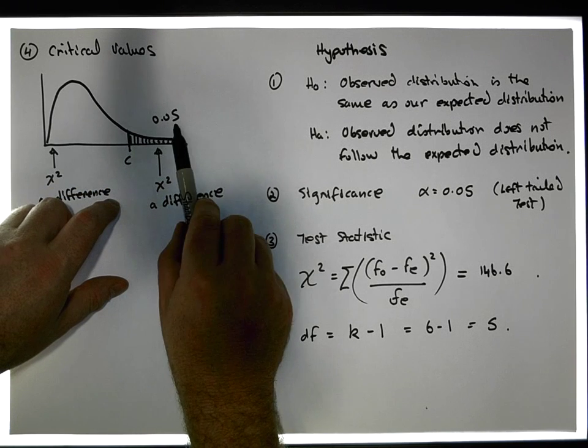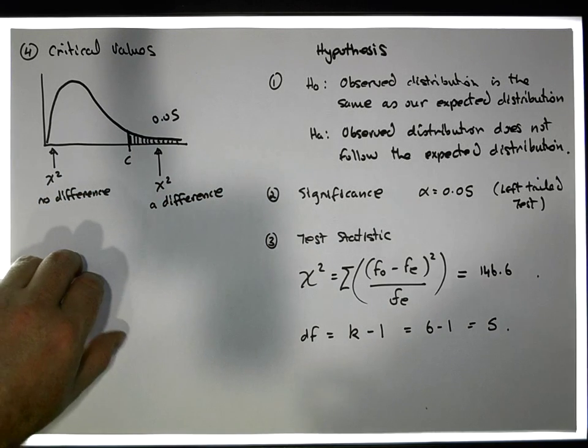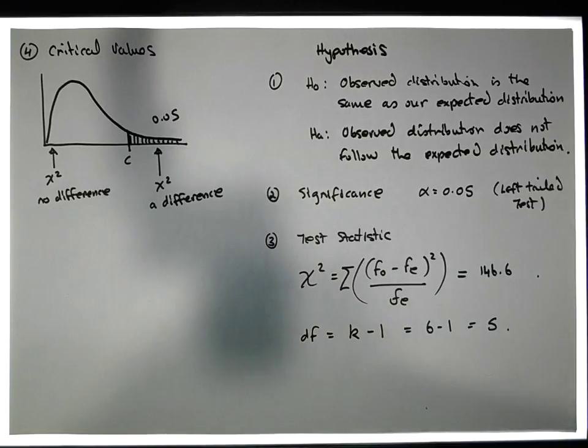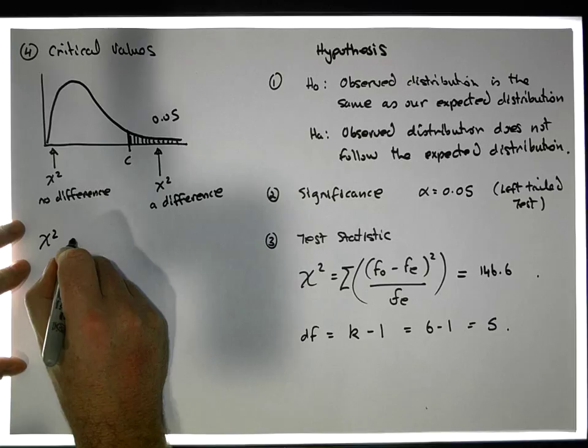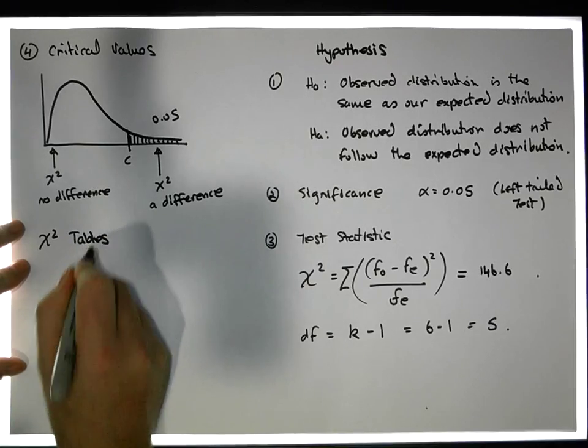If the null hypothesis is true, we would only expect to see test statistics down here this proportion of the time. So what we need to do is find this critical value. We'll go to our chi-squared tables.